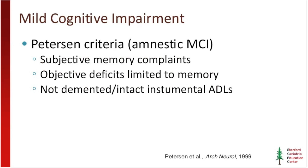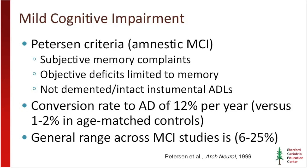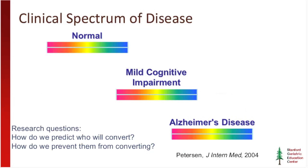If you follow MCI patients out over time, in the initial study about half of them had converted to Alzheimer's disease over four years, yielding about a 12% per year conversion rate from MCI to Alzheimer's, compared to just 1–2% per year in age-matched healthy older controls. This rate varies from about 6–25% across different studies. A critical area of research is predicting which MCI patient is more likely to convert and over what time period, and even more importantly, how to prevent people with MCI from progressing into full Alzheimer's disease.